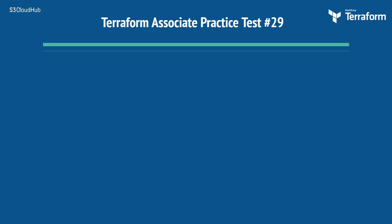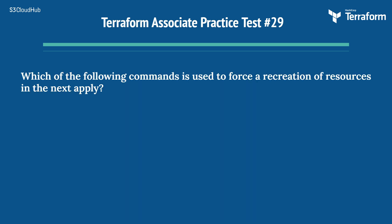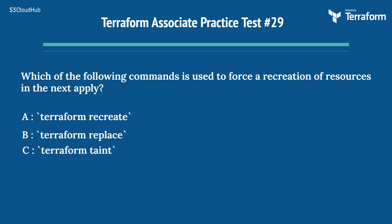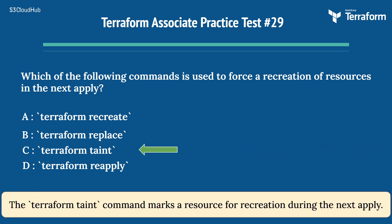The twenty-ninth question is: which of the following commands is used to force a recreation of resources in the next apply? Option A: terraform recreate. Option B: terraform replace. Option C: terraform taint. Option D: terraform reapply. The right answer is Option C: terraform taint. The terraform taint command marks a resource for recreation during the next apply.